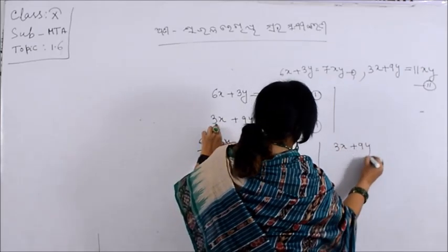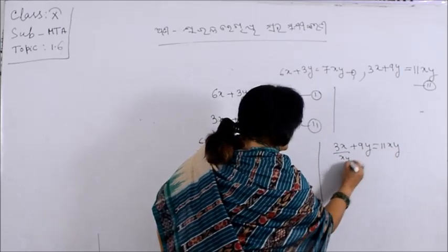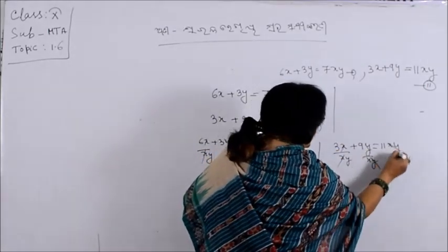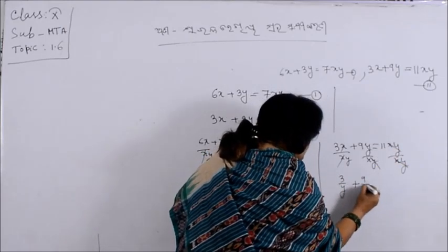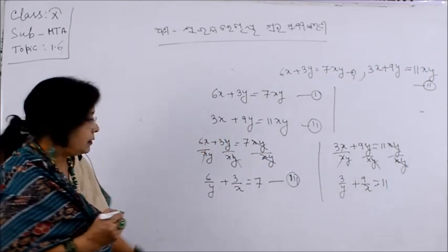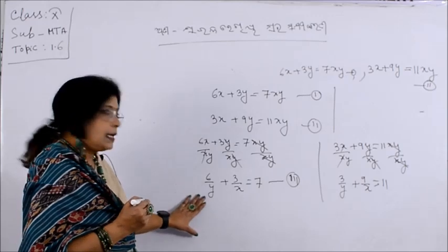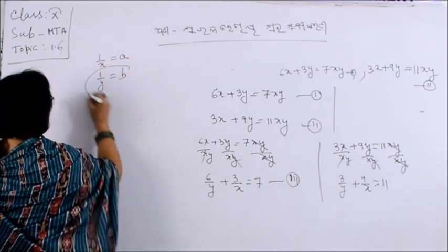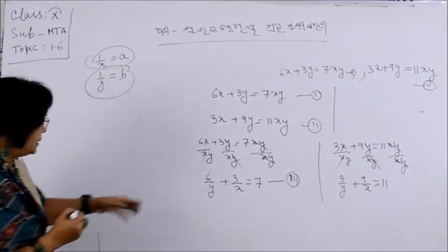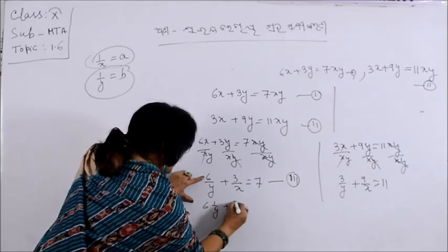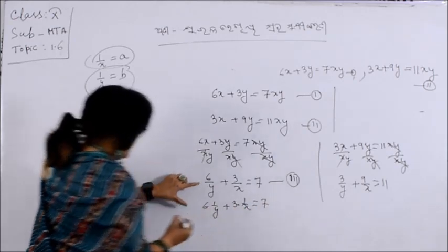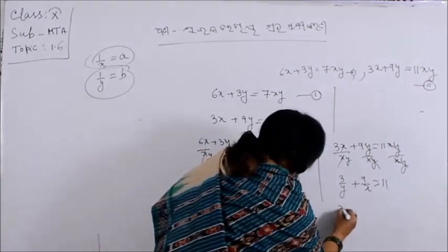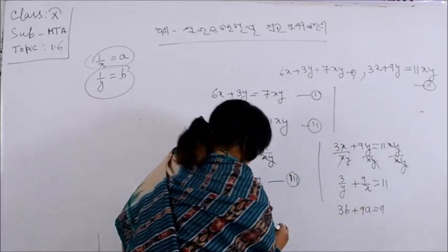3x plus 9y is equal to 11xy. Let 1 by x equal to A and 1 by y equal to B. Now we have to do this. Let's take a look at 6 into 1 by x. So 6b plus 3a is equal to 7.